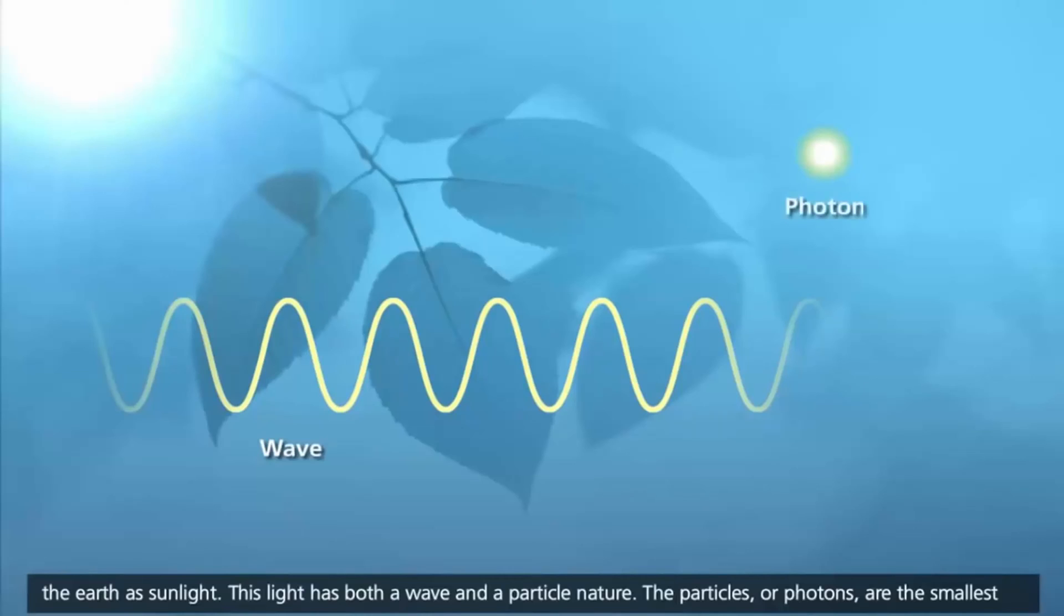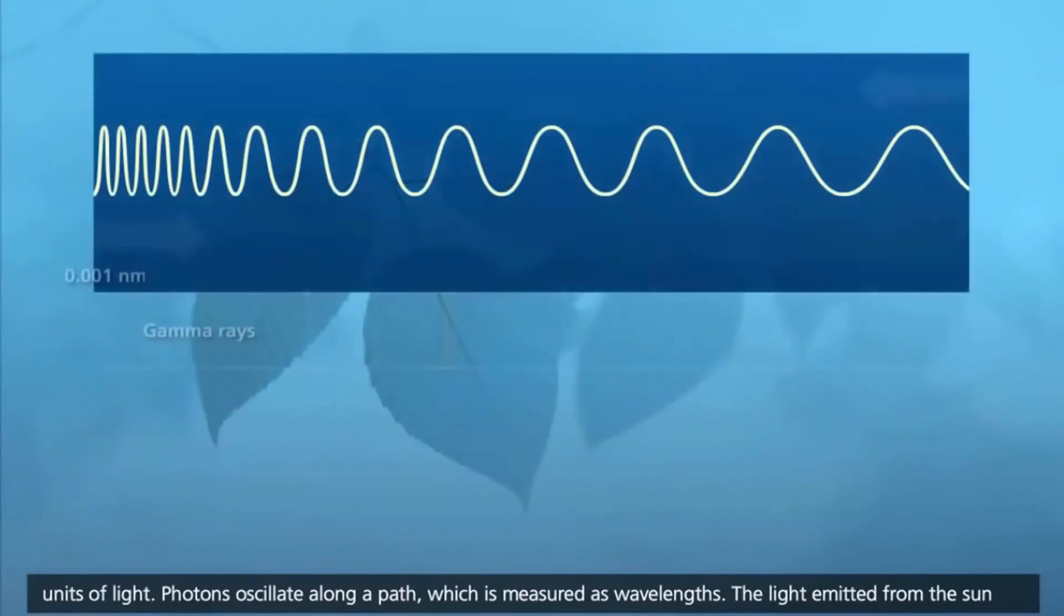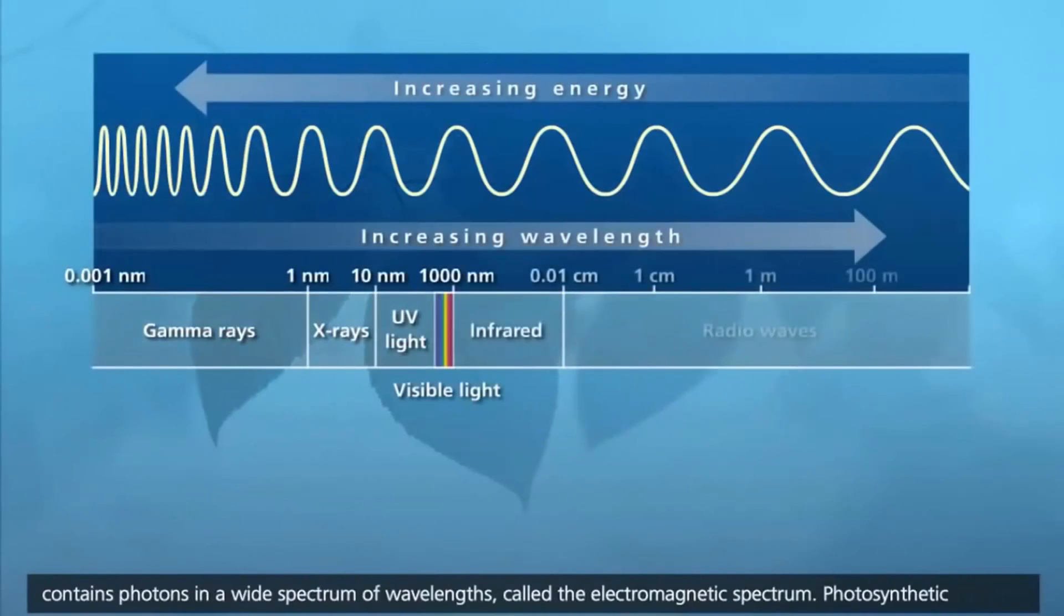The particles, or photons, are the smallest units of light. Photons oscillate along a path, which is measured as wavelengths. The light emitted from the sun contains photons in a wide spectrum of wavelengths, called the electromagnetic spectrum.